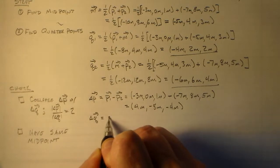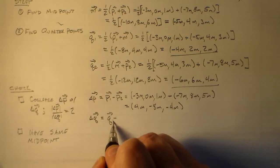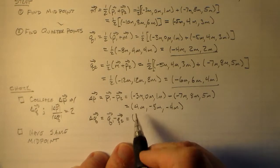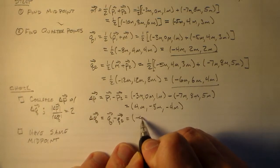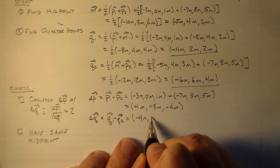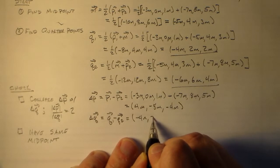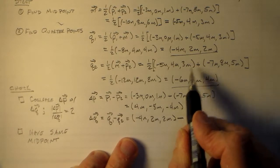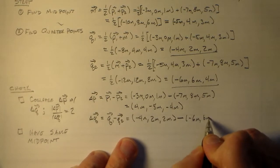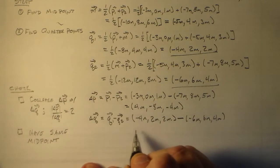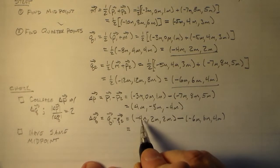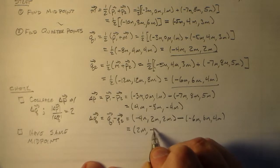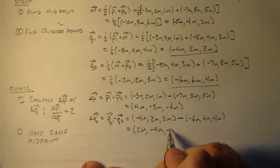Our delta Q, which is equal to Q1 minus Q2, is equal to minus 4 meters, 2 meters, 2 meters, minus minus 6 meters, 6 meters, 4 meters. And when we actually carry that out, minus 4 plus 6 is 2 meters, 2 minus 6 is minus 4 meters, 2 minus 4 is minus 2 meters.